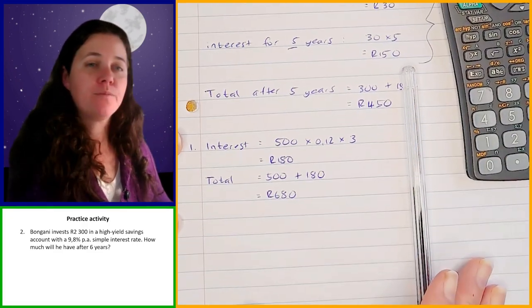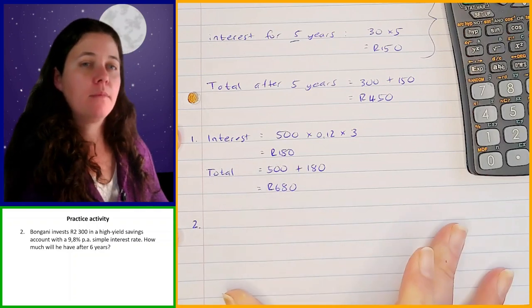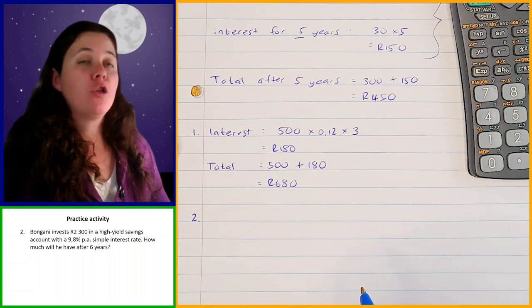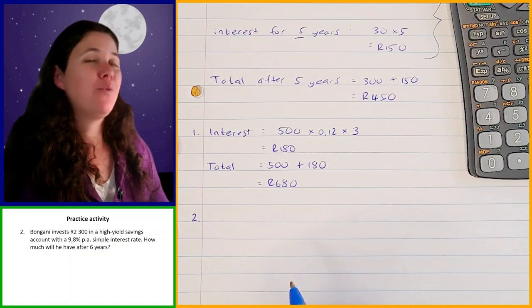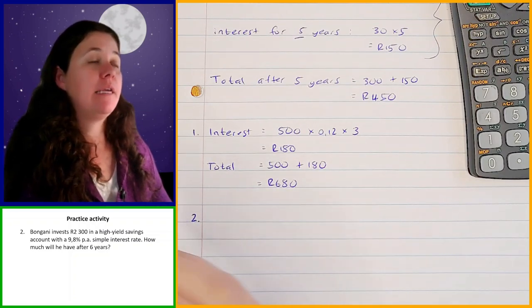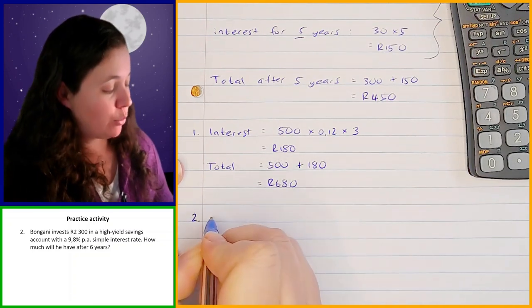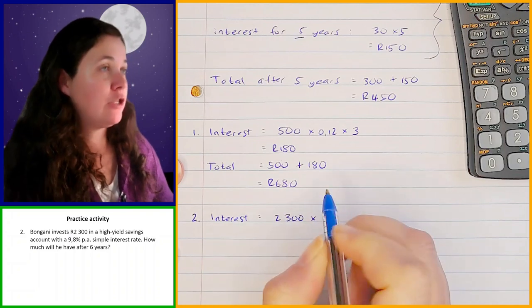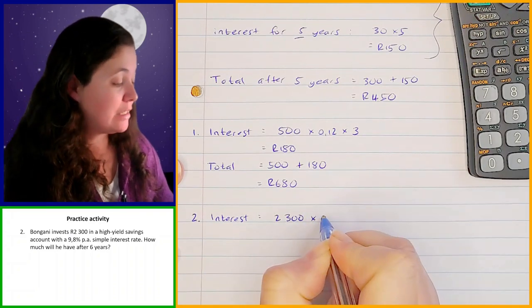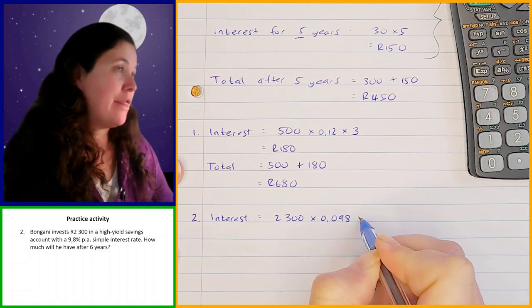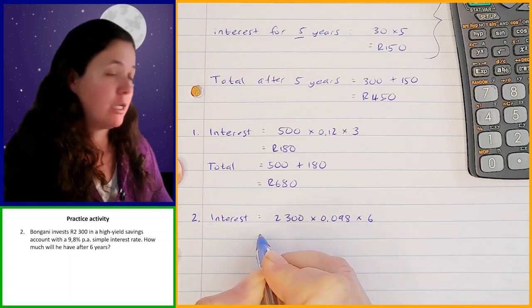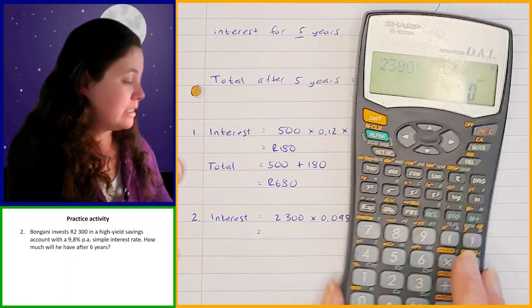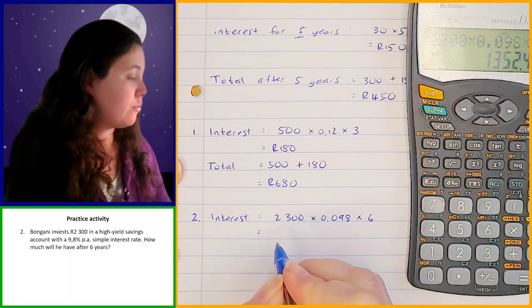Bongani invests 2,300 rand, the interest rate is 9.8% per annum simple interest, and the time is six years. We start by working out our interest: 2,300 multiplied by the interest rate of 9.8%, which is 0.098, multiplied by the number of years, which is six. So 2,300 times 0.098 times 6 should give you 1,352 rand 40.